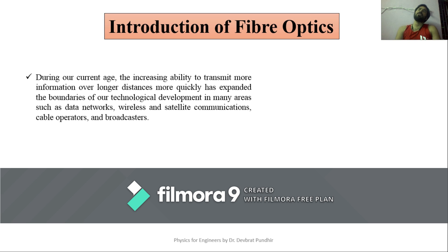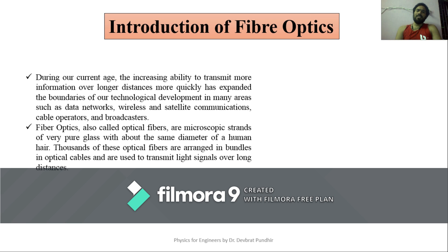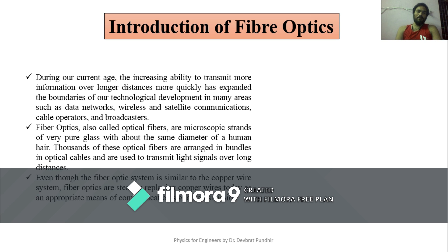Using fiber optics, a signal can be transmitted from one place to another thousands of kilometers away with very high speed, and the loss is very very less. Bundles of fibers can be used to transmit information because light is involved, so the signal travels with the speed of light. In the recent era, copper wire has been replaced with optical fiber communication to make a more efficient transmission system.